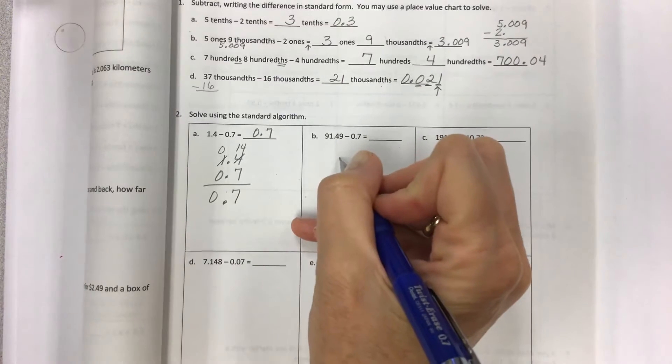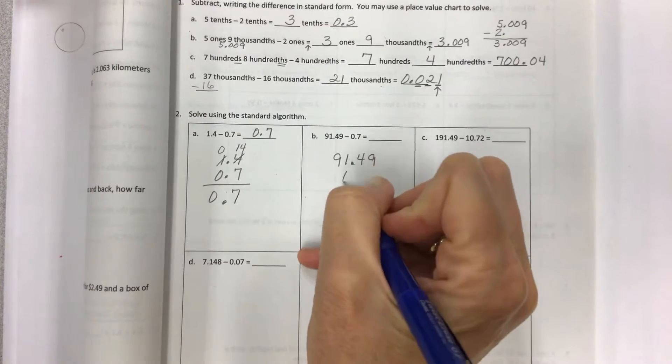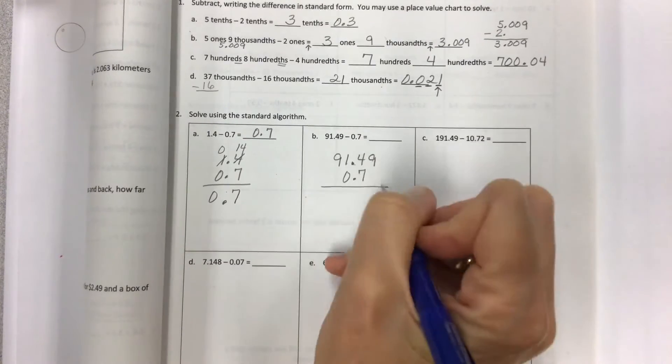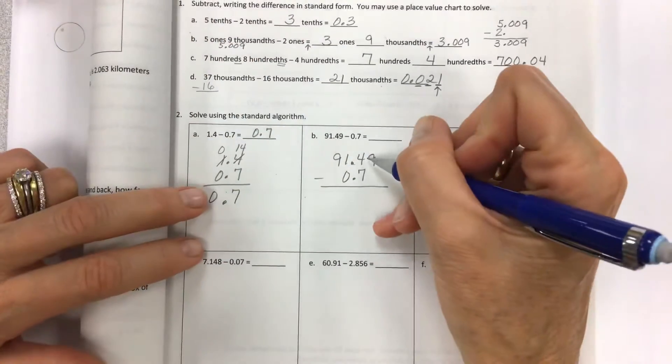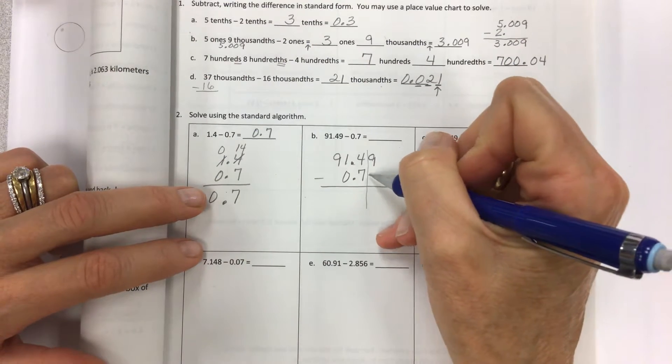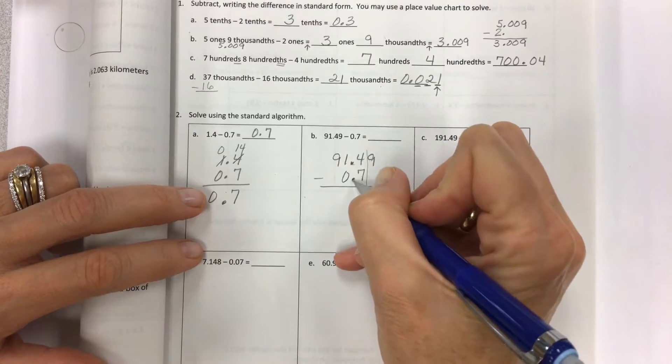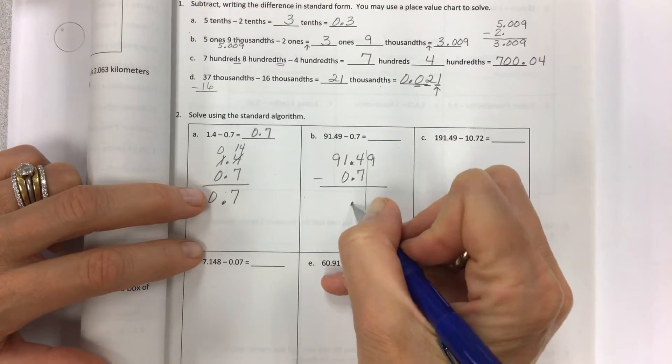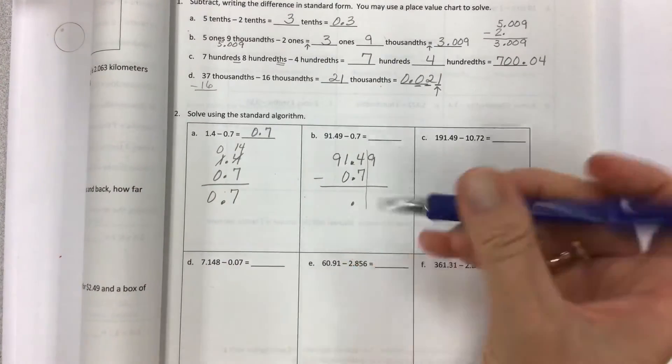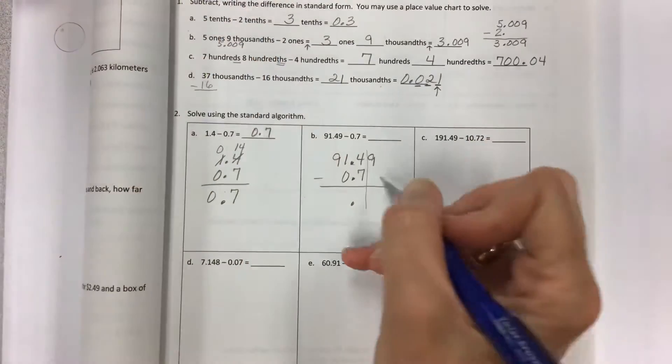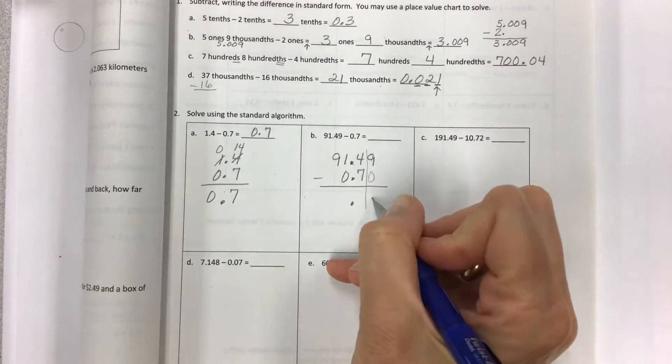Set these all up using the standard algorithm. 91.49 minus 0.7. Watch out! Look at how I line these up. You have to be very, very careful. Do not put anything in the hundredths column. There's nothing there. Make sure your 7 is under the 4. Line up by the decimals. I could even put decimal down right now because it's going to go there.